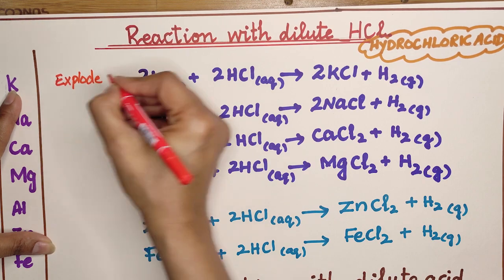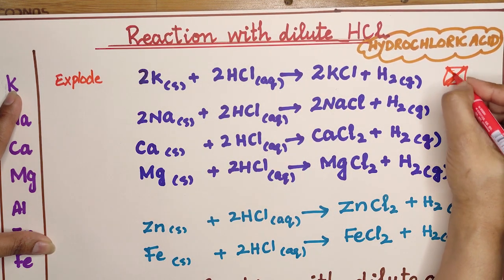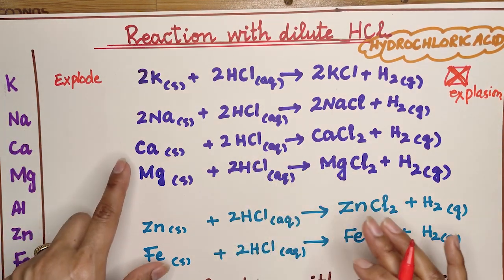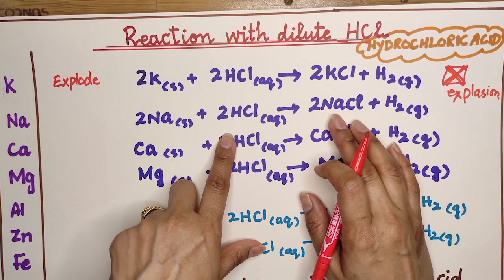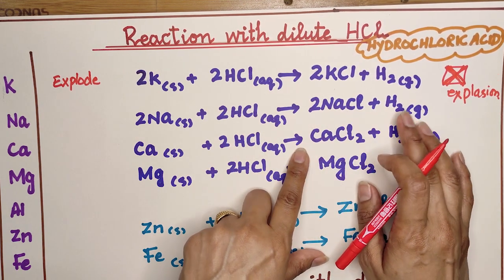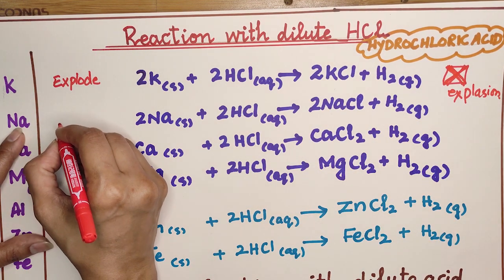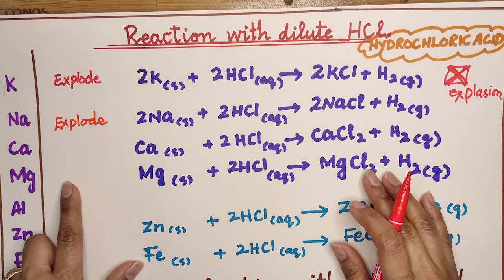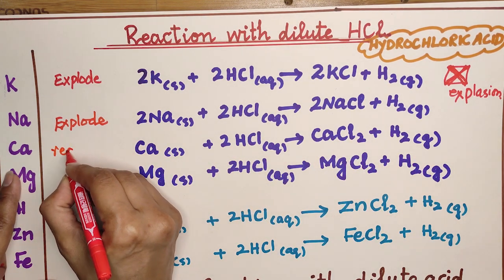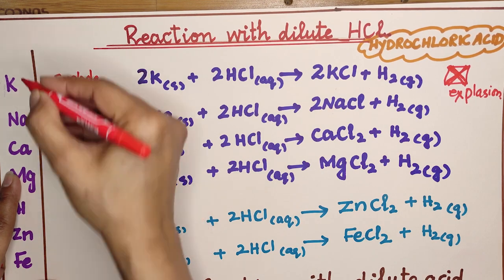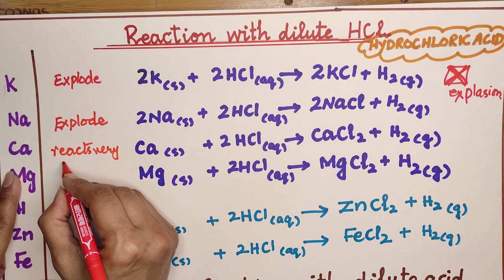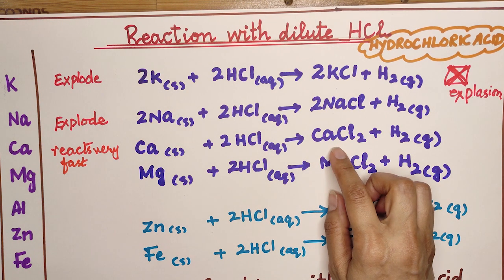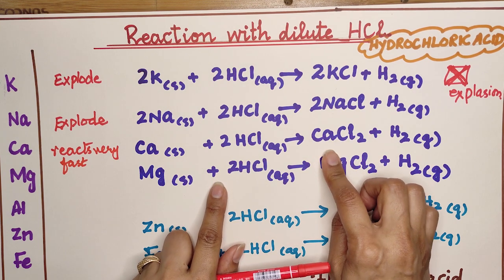Sodium reacts with hydrochloric acid to form aqueous sodium chloride and hydrogen gas; this again produces an explosion and a vigorous reaction. Calcium reacts very fast with hydrochloric acid. As we go down the series, reactivity decreases. Bubbles of hydrogen gas are produced along with calcium chloride solution.